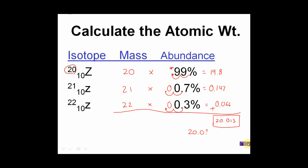Crunching the numbers: 20 × 0.99 = 19.8, 21 × 0.007 = 0.147, and 22 × 0.003 = 0.066 — all in atomic mass units. Adding all values together, my final weighted average is 20.013 atomic mass units. I'll give you the formula on the test. Just be familiar with how to find the mass from the mass number, and how to convert percent abundances into decimals by moving the decimal place two positions. With that, you'll be able to calculate the average atomic mass and recognize which isotopes occur most in nature.